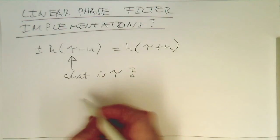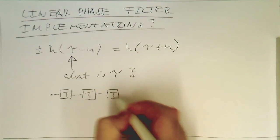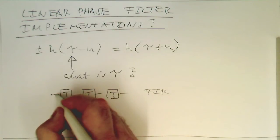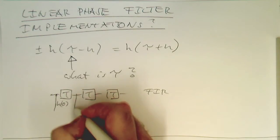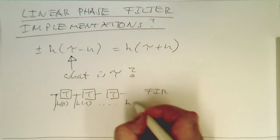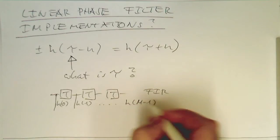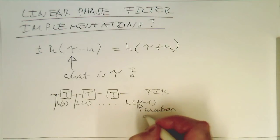So remember our FIR filter. So if we have here our FIR filter and here we've got these so-called taps, h of 1 and then this goes here to h of m minus 1 here. And m is a number of taps.